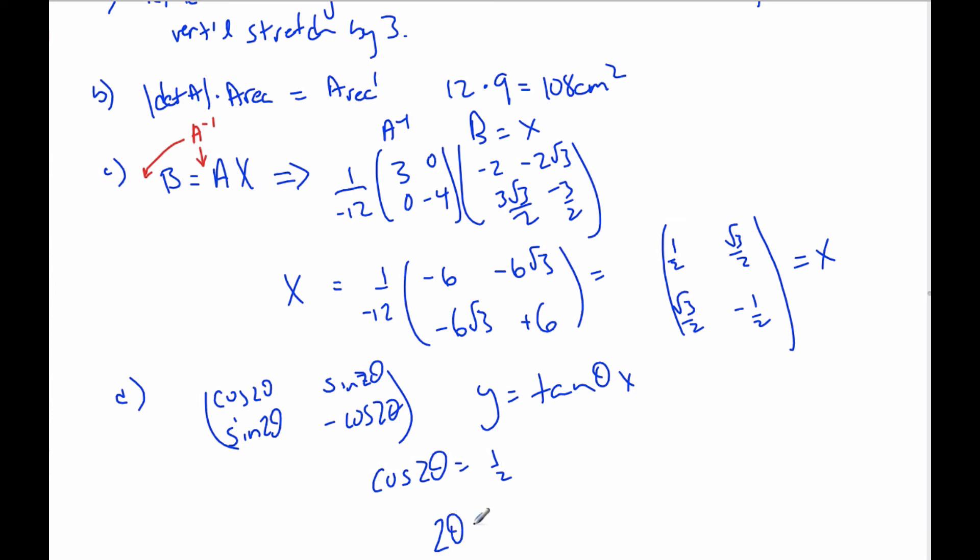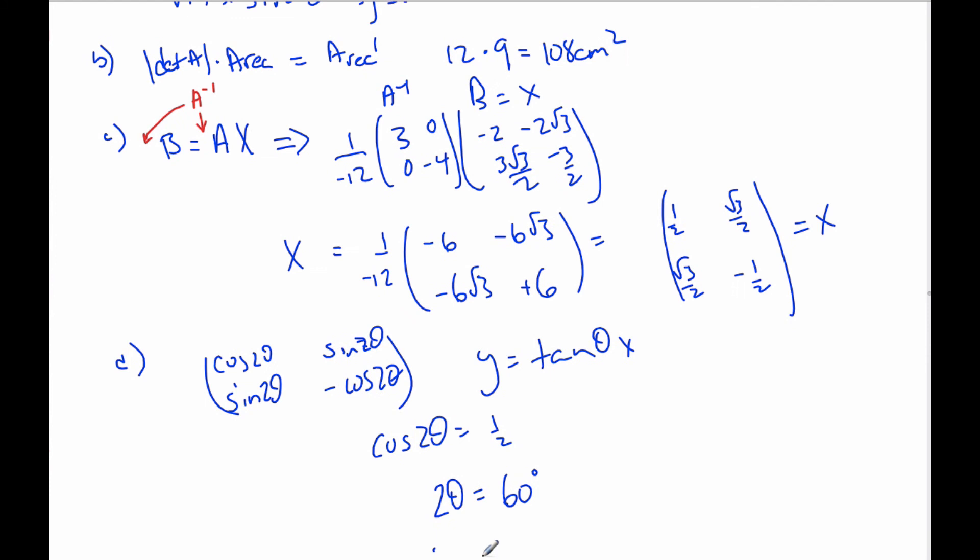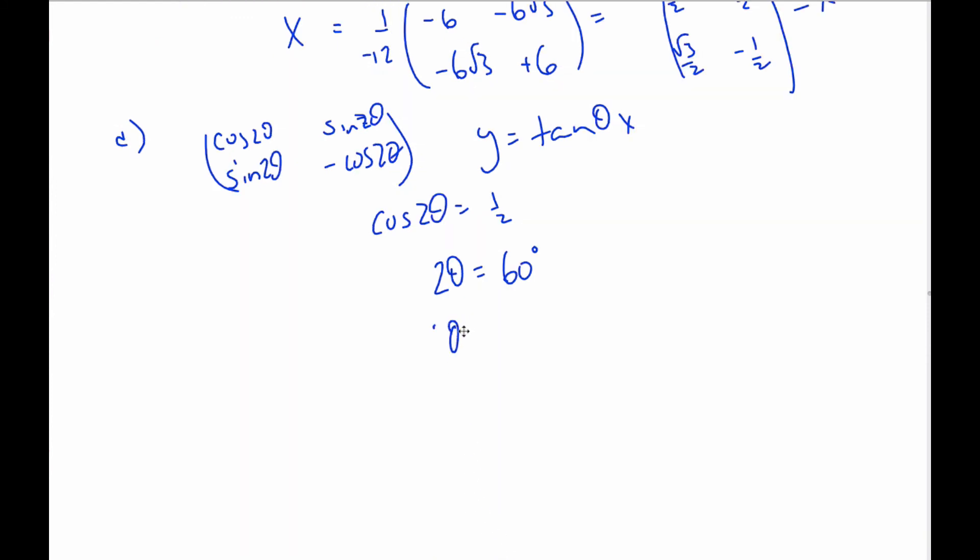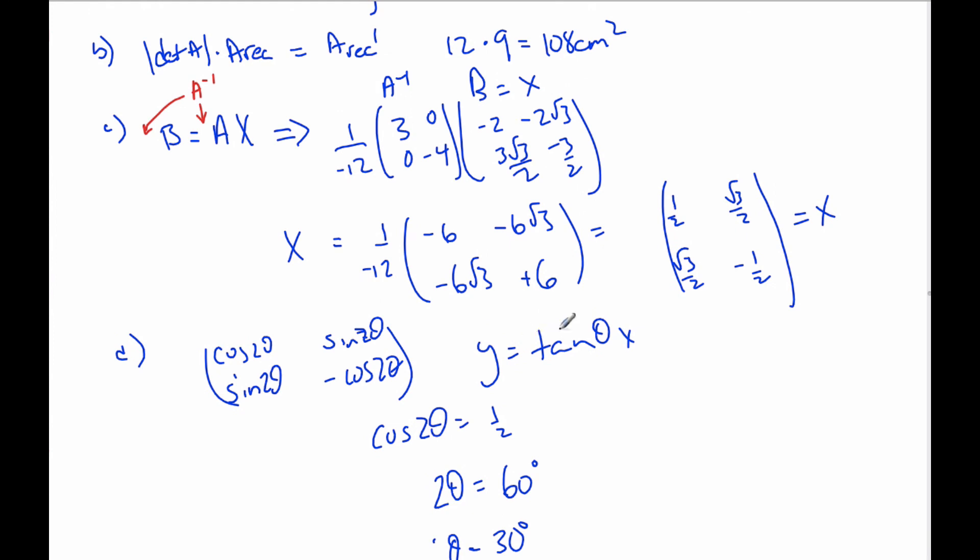And so then 2θ, using my calculator, and I know this one off by heart, is 60 degrees. Divide it by 2, and I will get 30 degrees. And so now, I know θ is 30 degrees. It's been reflected over some line, Y equals tangent θ X.